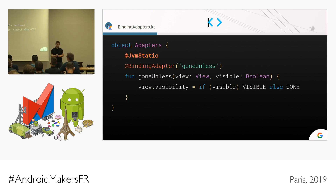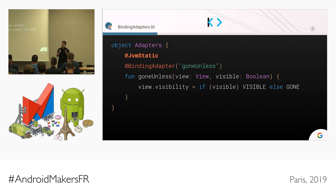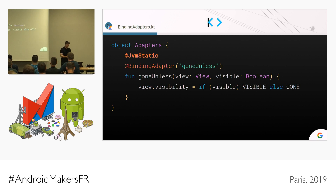Another way of doing this is by putting binding adapters inside an object, but you have to remember to add the @JvmStatic annotation. Otherwise it's not going to be a static method — it's just going to be an instance method. The problem with this approach is that if you forget that annotation, you're going to have a very bad time knowing what's wrong with the binding adapter. Don't ask me how I know that.